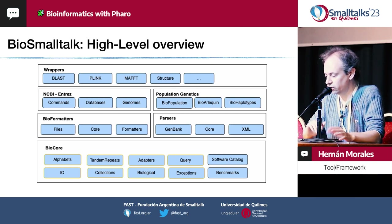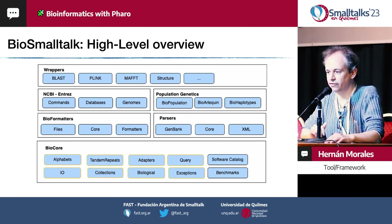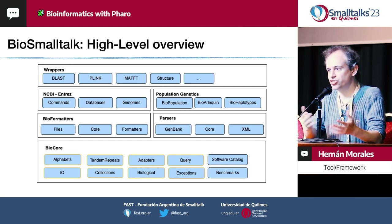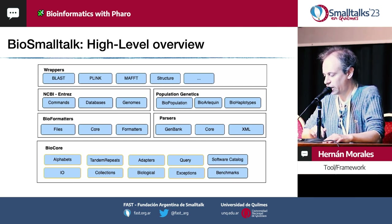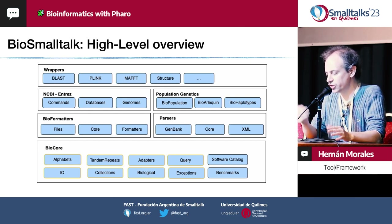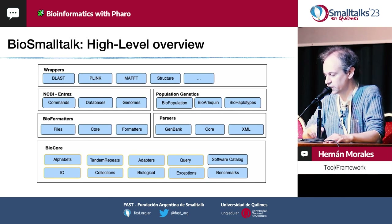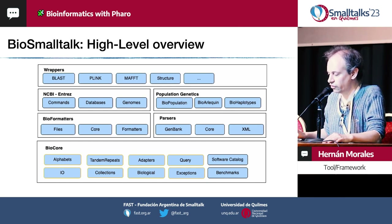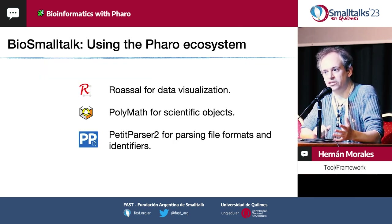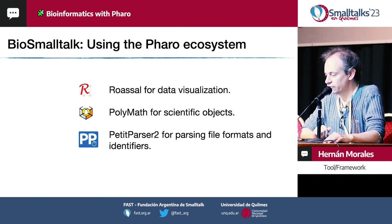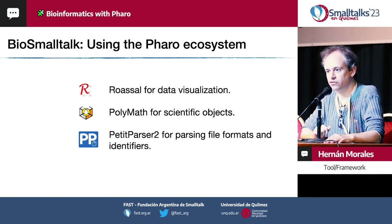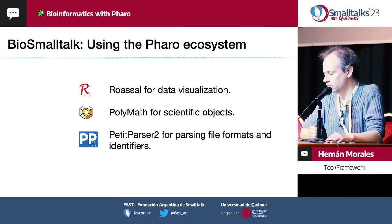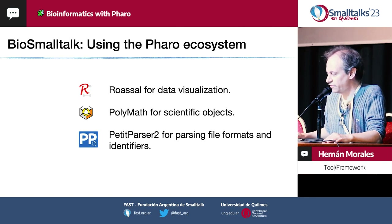At the architecture level, there is a core of modules with objects for biological data like sequences and adapters. Then we have higher-level objects dealing with databases, population genetics, and parsing for files. Under the hood it uses essential libraries in the Pharo ecosystem, like Roassal for visualization, PolyMath for accessing matrices and algorithms, and PetitParser for parsing file formats.